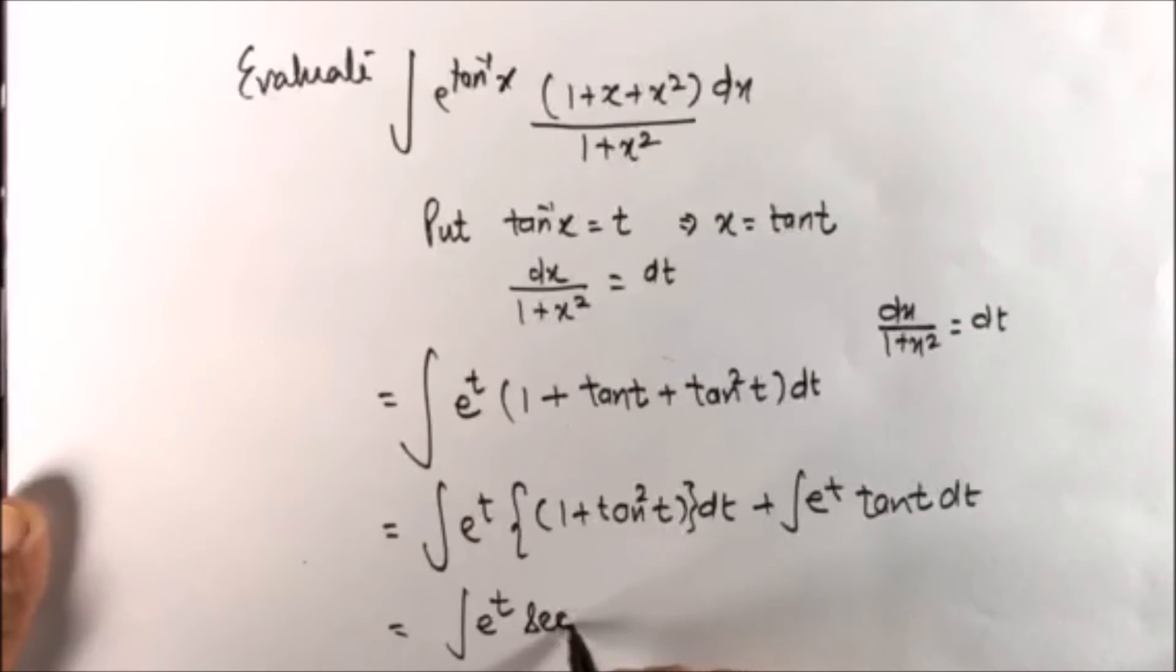So I'm writing 1 plus tan squared t as secant squared t and the other part remains as it is.